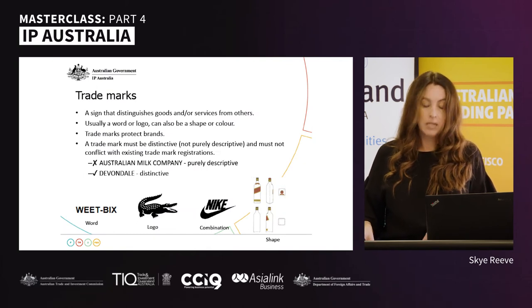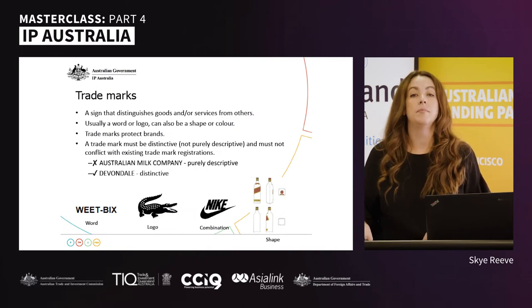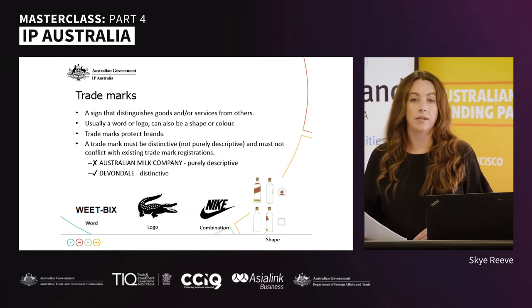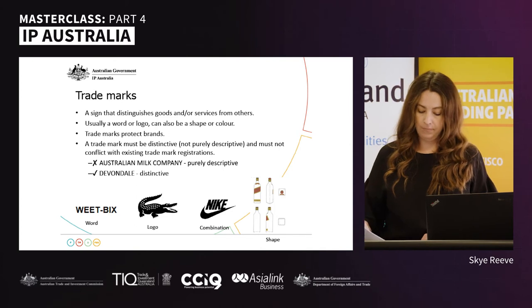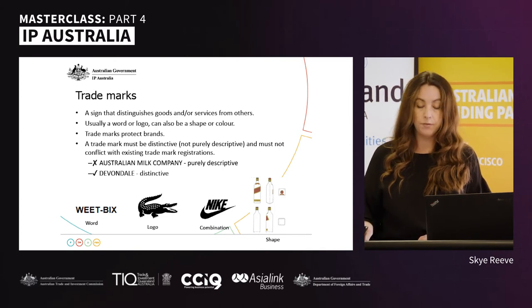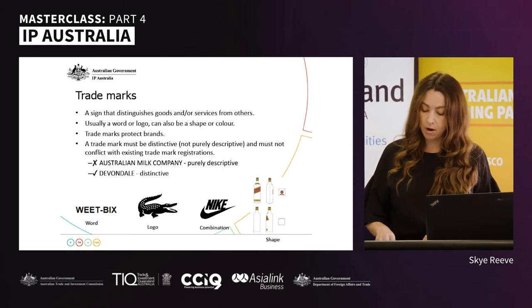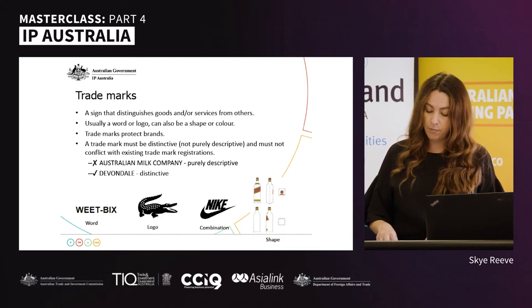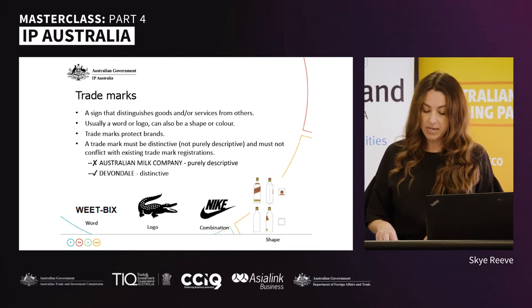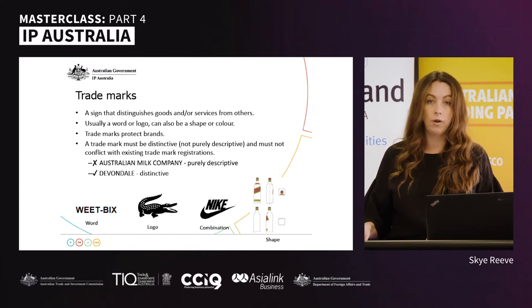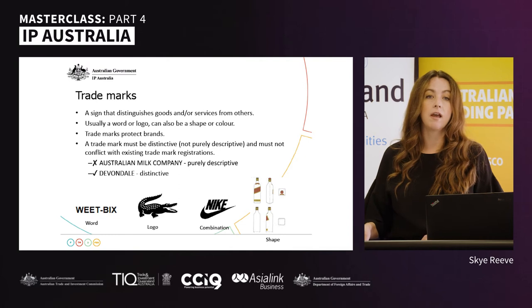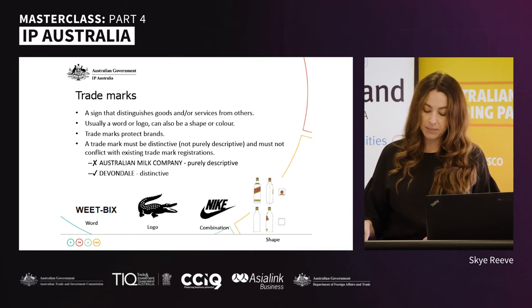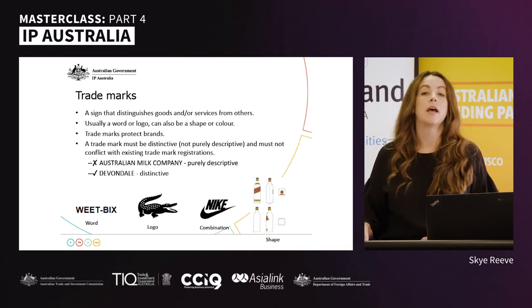A brand can be the most valuable IP a company has. A trademark is the IP right used to protect a brand — it is a sign that distinguishes goods and services from those of others. What can be a sign is quite broad and includes a word, logo, shape, color, or combinations thereof. It must be distinctive and not descriptive.